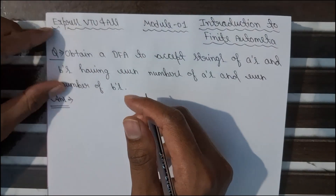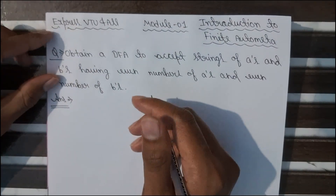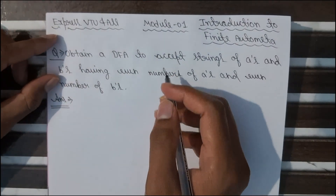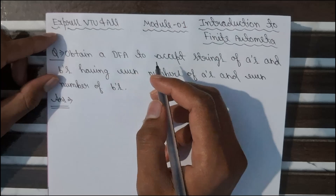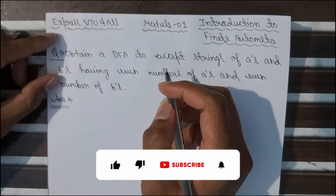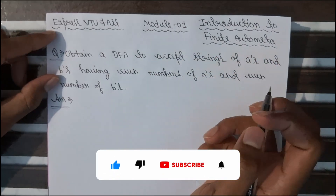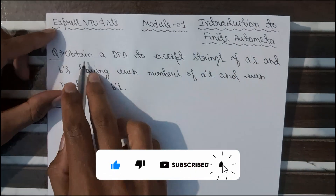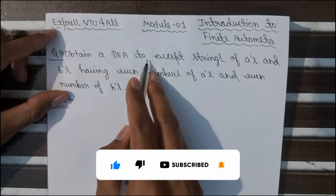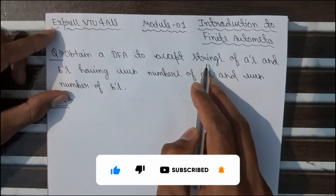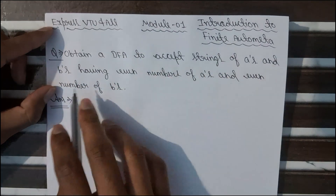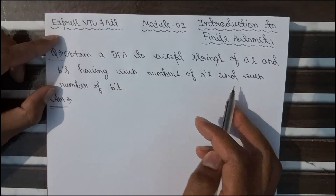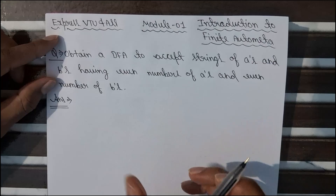Hello everyone, welcome back to our YouTube channel Express Video For All. Today we are going to solve a very important question from Module 1: Introduction to Finite Automata. Our question is: obtain a DFA to accept strings of A's and B's having even number of A's and even number of B's.